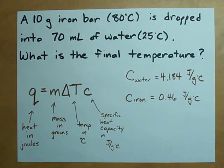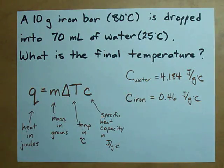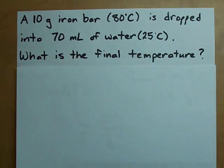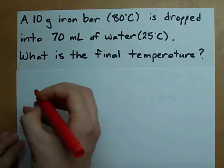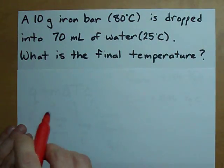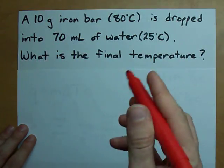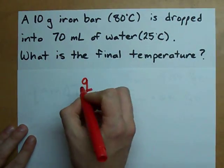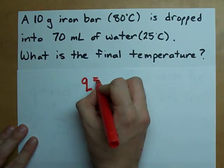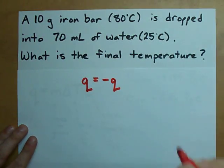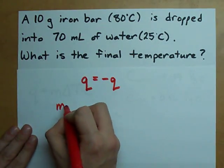This is done in something called coffee cup calorimetry, which is probably a lab you're going to end up doing. But this is how you end up solving a question like this. Because the heat absorbed by the water is the same as the heat given off by the iron, we can write that the amount of heat absorbed by the water is the amount of heat lost by the iron.